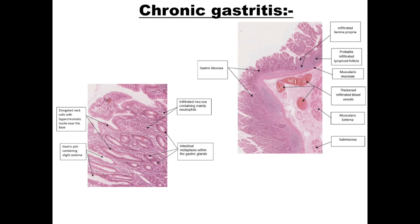Chronic gastritis is defined as the presence of chronic mucosal inflammatory changes, leading eventually to mucosal atrophy and intestinal metaplasia. The main cause is Helicobacter pylori. Neck cells become elongated and hyperplastic and some of the tubular structures become slightly distorted. The superficial lamina propria contains a rich infiltrate of chronic inflammatory cells containing lymphocytes and plasma cells.